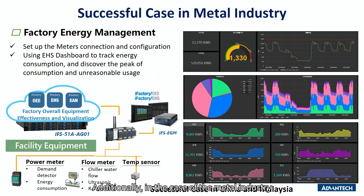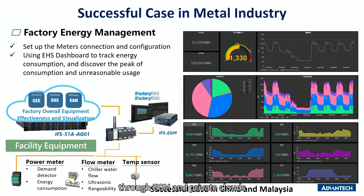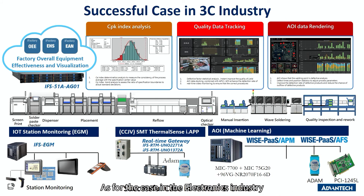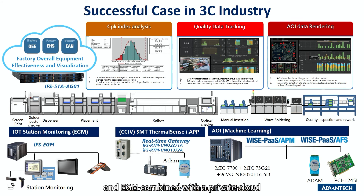Additionally, in the case of the metal industry, the manufacturer acquired environmental data from sensors and devices through EGN and private clouds to realize energy efficiency management. As for the case in the electronics industry, the manufacturer used RTN Gateway to collect SMT data and EGN combined with the private cloud to utilize machine production data for OEE management, using visualization dashboards and alarm notifications.